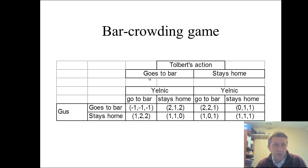So if Tolbert goes to the bar, those four outcomes we looked at already are the four outcomes of the game. But if Tolbert stays home, these are the four potential outcomes. Because Gus and Jelnick could either both go to the bar, both stay home, or one of them go to the bar and one stay home. So those are the four possible actions for each of Tolbert's actions, which of course gives us a particular outcome.